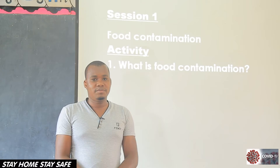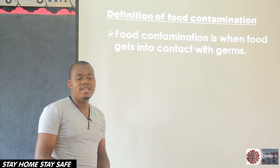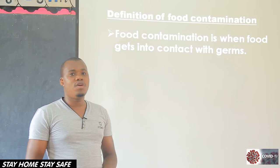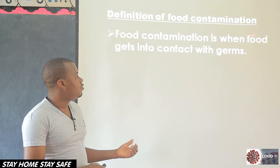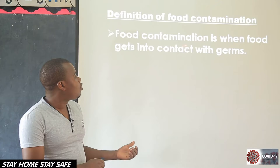Okay, thank you. I think you are done. What is food contamination? Compare your answer with mine. Food contamination is when food gets into contact with germs. I remember in P2 you learned about germs — living things that cause diseases. When food gets into contact with germs, that is food contamination, and we say this food is now contaminated.